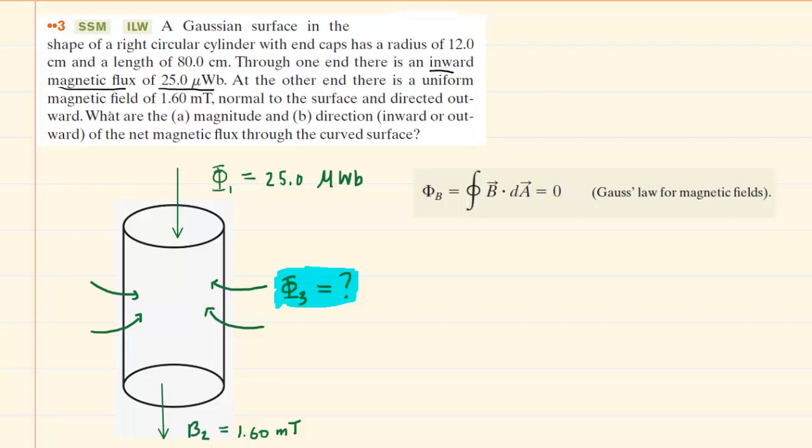At the other end, there was a uniform magnetic field, and it says it was normal to the surface and directed outward. So down here, we have drawn a magnetic field line that is pointing outward.